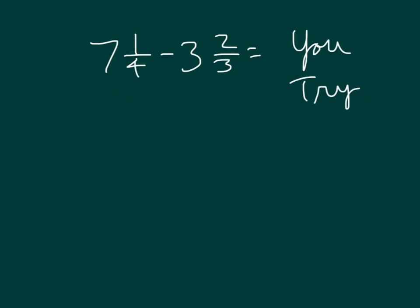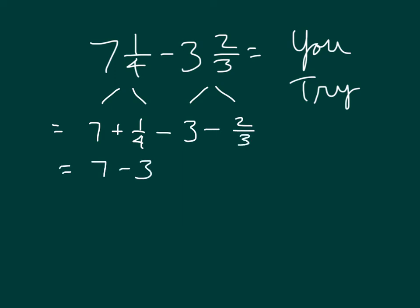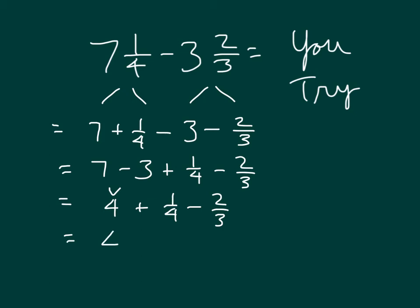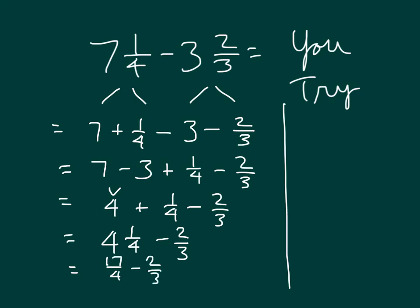It is your turn to try: 7 and 1 fourth minus 3 and 2 thirds. Break it down — you're subtracting 3 and also subtracting 2 thirds. So we have 7 put together with the 1 fourth, then subtracting 3, and also subtracting the 2 thirds. Put the whole numbers together: you'll be 1 fourth more than that, then subtracting the 2 thirds. 7 minus 3 is 4, then we have 4 plus 1 fourth minus 2 thirds. For Method 2, put the 4 and 1 fourth together to get 4 and 1 fourth, then convert to 17 fourths minus 2 thirds, get a common denominator, and solve from there.